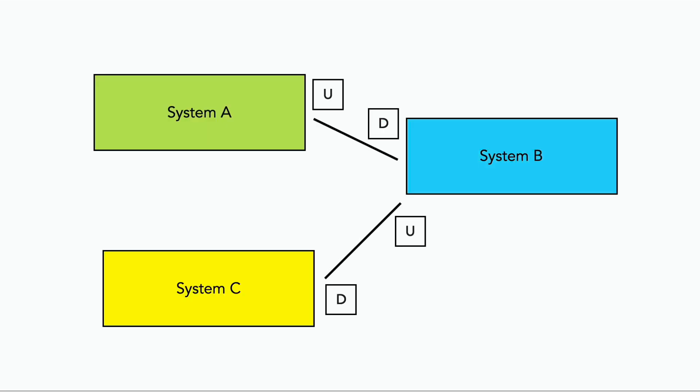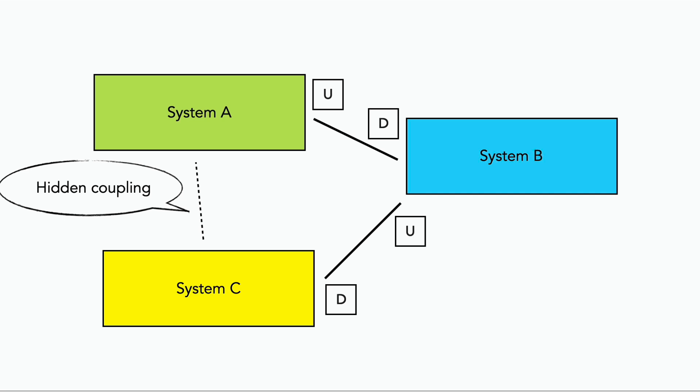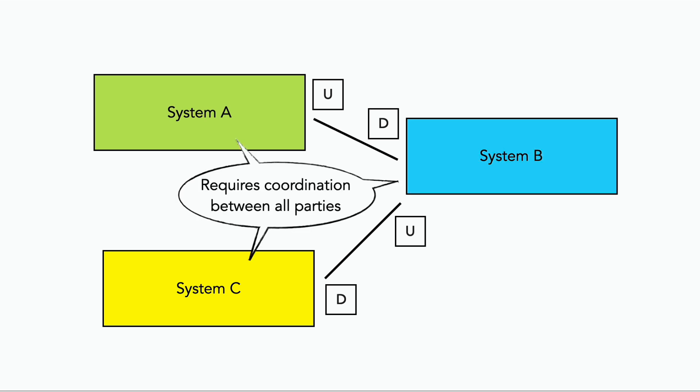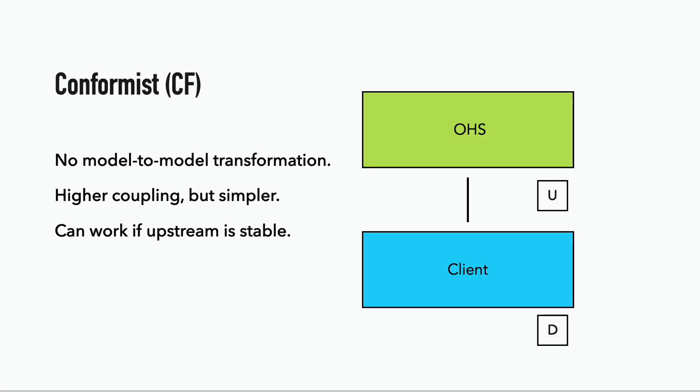Another thing to consider is that if the conformist approach is taken across multiple bounded contexts, you can create hidden coupling between systems, where changes in one can propagate all the way to another that has no direct links with it. Changes then require a lot of coordination between teams, which can be very expensive. That said, the conformist approach can work if the upstream is stable — for example, if it implements an industry standard specification.